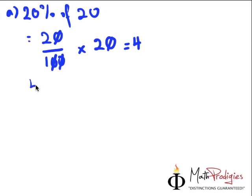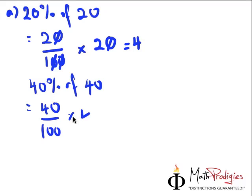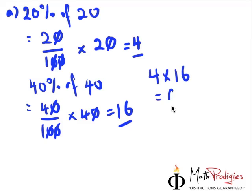And 40% of 40, similarly, is just 40 over 100 times 40. And what you will see is you cancel this and this, and you have 4 times 4, which gives you 16. So the question is actually asking you, what's the product of 4 and 16? So 4 times 16 is going to give you the answer of 64. If you got that one right, high five! Because you are a math prodigy. Good job.